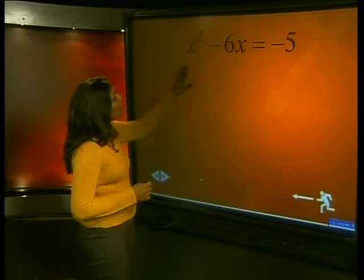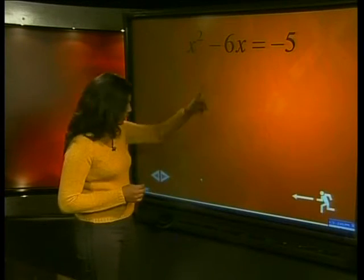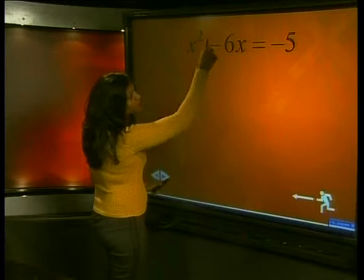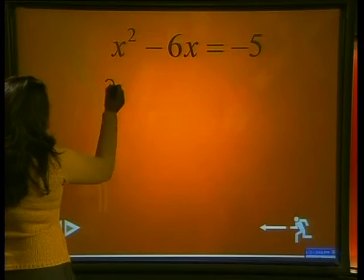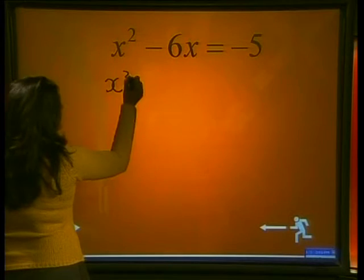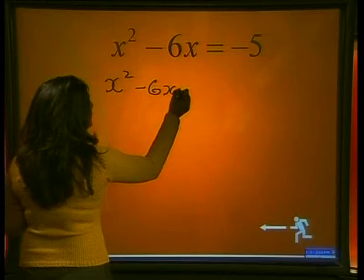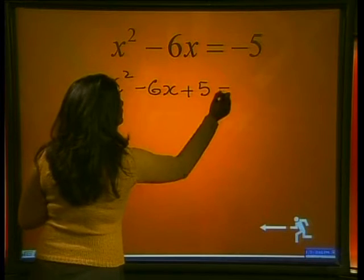Let's look at the first quadratic equation from our list: x squared minus 6x equals negative 5. If we add 5 to both sides of the equation, we get x squared minus 6x plus 5 is equal to 0.